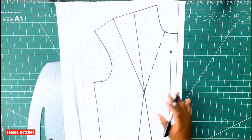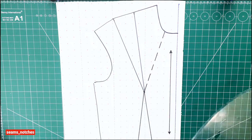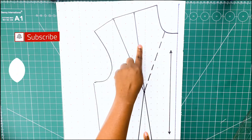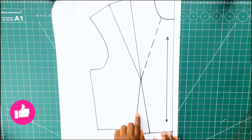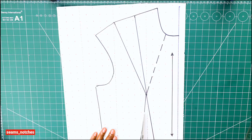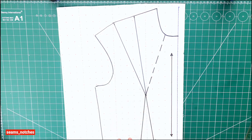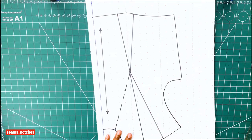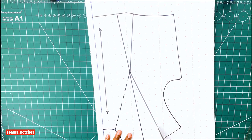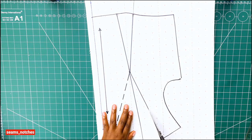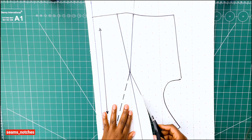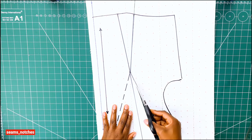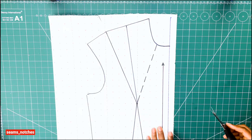Once that is drawn in, the next step will be to close the shoulder dart and the waist dart. To achieve that, we need to slash open the waist dart, then rotate our paper to the shoulder dart and repeat that same step. Remember, when slashing open your dart lines, you don't need to cut all the way through.